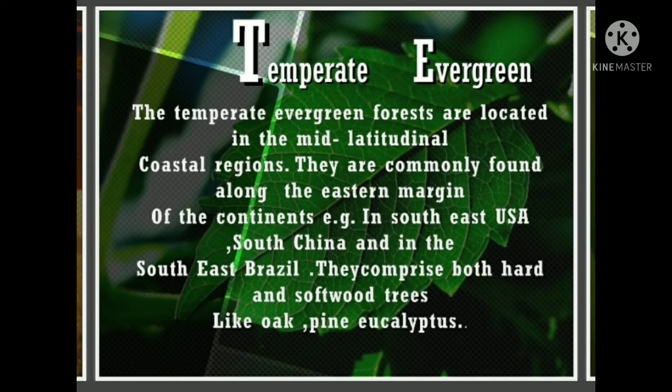Third, temperate evergreen forests. These forests are located in the mid-latitudinal coastal regions. They are commonly found along the eastern margins of the continents — for example, in the southeast USA, south China and southeast Brazil. They comprise both hard and soft trees like oak, pine and eucalyptus.